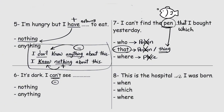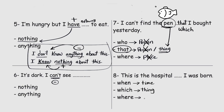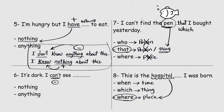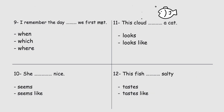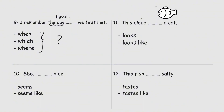This is the hospital blank I was born — when, which, or where? We use 'when' after time, 'which' after a thing, and 'where' after a place. The hospital is a place, so we use 'where': This is the hospital where I was born. Now you answer this one: I remember the day blank we first met — when, which, or where? The day is time, so what do we use? Let me know in the comments.